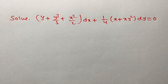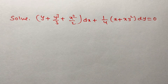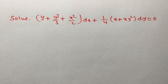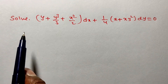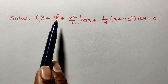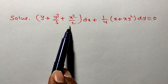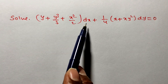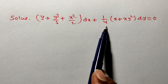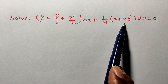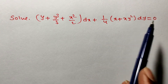Hi friends, welcome back to team education. In this video we are solving a problem on first order and first degree differential equation — specifically the non-exact differential equation solution. The given problem is: solve (y + y³/3 + x²/2)dx + (1/4)(x + xy²)dy = 0.